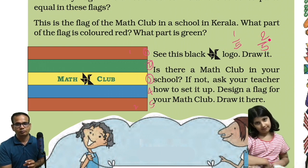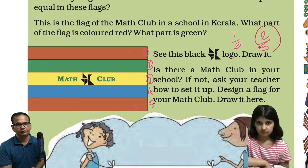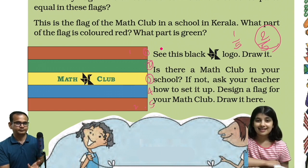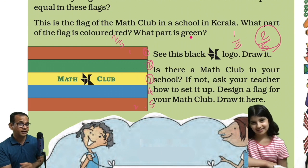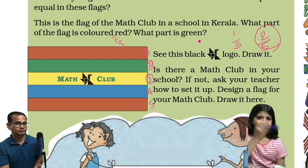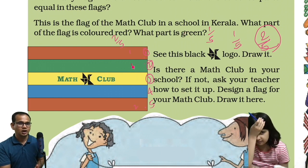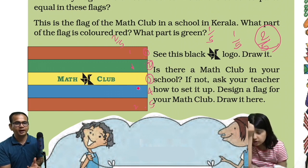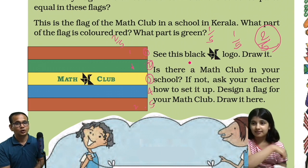Red is in one part here and one part there, so together it is two by five. What part of the flag is colored red? Two by five. And what part is green? One by five, because green is in one part of this flag, so one by five.